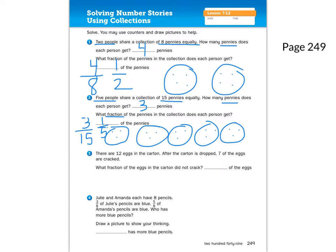For number three, there are 12 eggs in the carton. After the carton is dropped, seven of the eggs are cracked. What fraction of the eggs did not crack? We know the whole is 12 and seven cracked, so how many didn't crack? Five-twelfths did not crack.